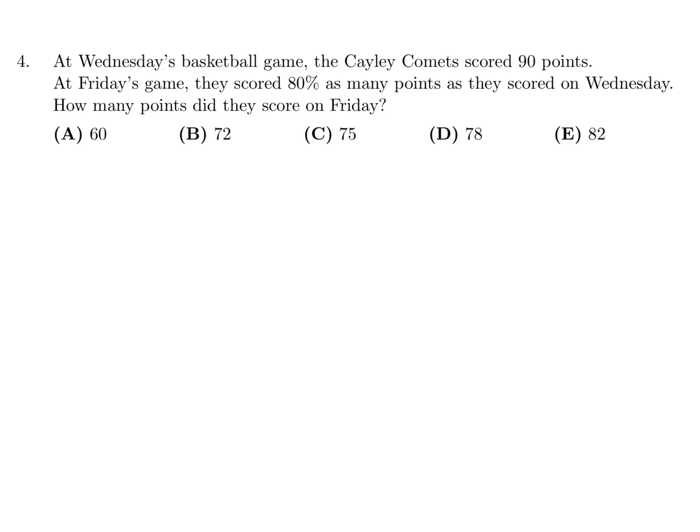At Wednesday's basketball game, the Cayley Comets scored 90 points. At Friday's game, they scored 80% as many points as they scored on Wednesday. How many points did they score on Friday? So 80% is 0.8 of the 90, and that is the calculation, and that's 72, and therefore the answer is B.